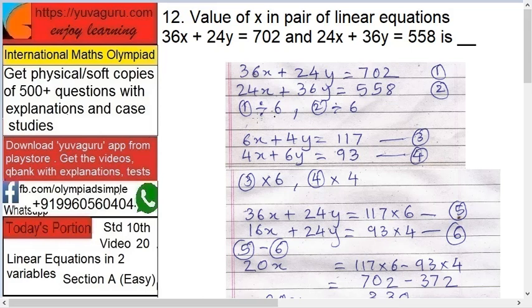Let's solve now. We have 6x over here and 4x over here. We have to combine them. Since we have to find x, we have to remove y. So multiply equation three by 6 and equation four by 4.